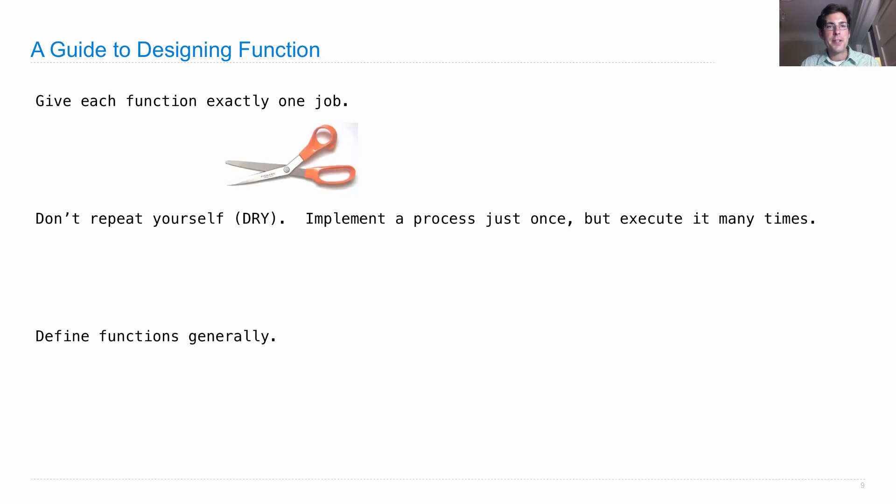As illustrations, scissors are the kind of model you want to think about when you're defining a function. They're really good at cutting stuff. That's their one job. A Swiss Army knife is good at doing lots of different things in lots of different ways. That's not a function. That's something else.